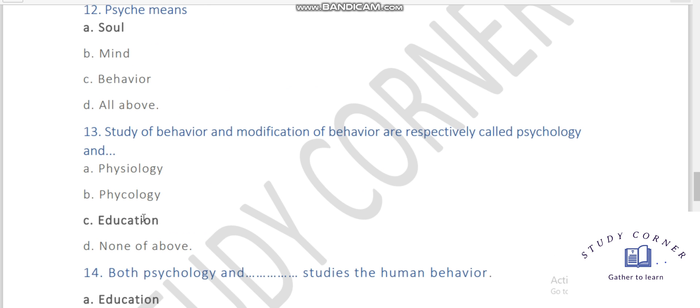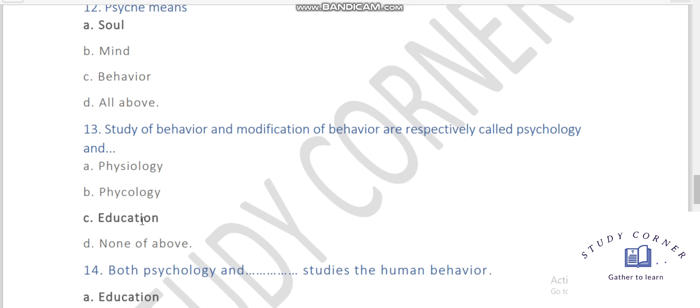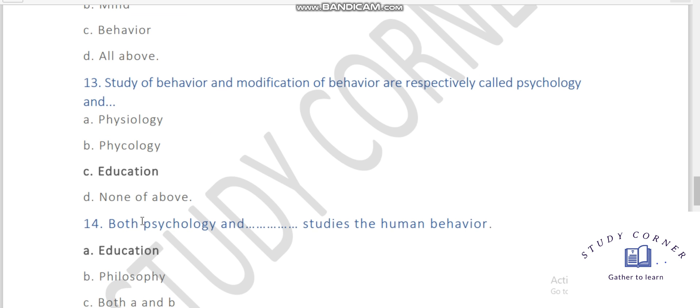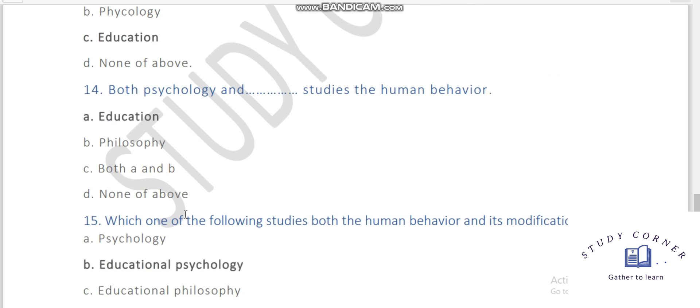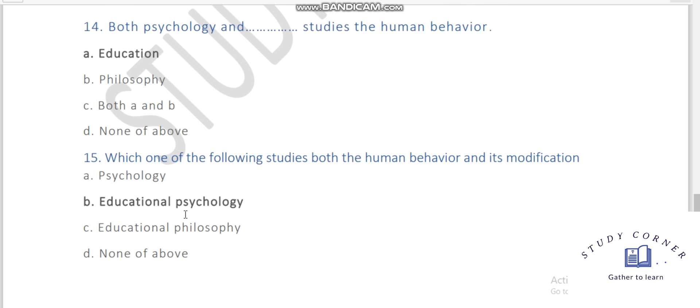Study of behavior and modification of behavior are respectively called psychology and education. Both psychology and education study the human behavior. Psychology being or education. Which of the following study is both the human behavior and its modification? Of course, it is educational psychology.